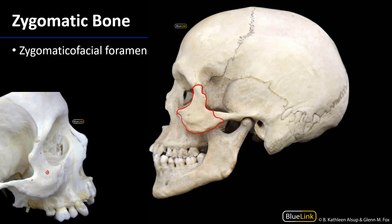The zygomaticofacial nerves are sensory branches of V2. In fact, all of V2 is sensory, as is all of V1, and these branches come through to innervate the skin of the malar region of the skull.